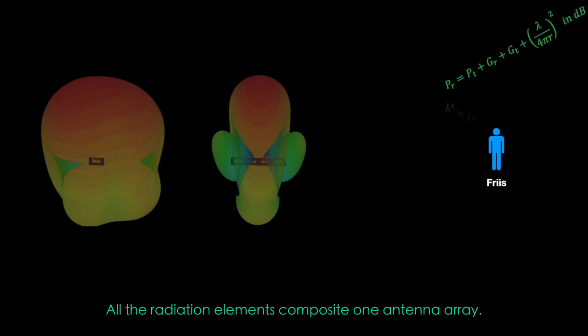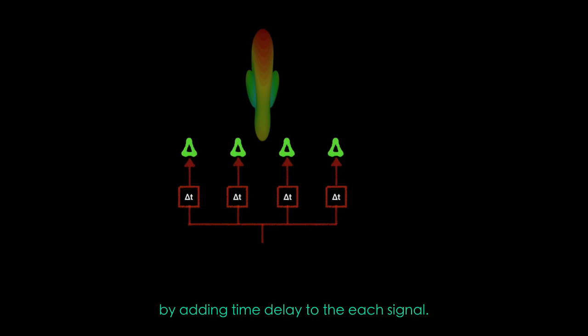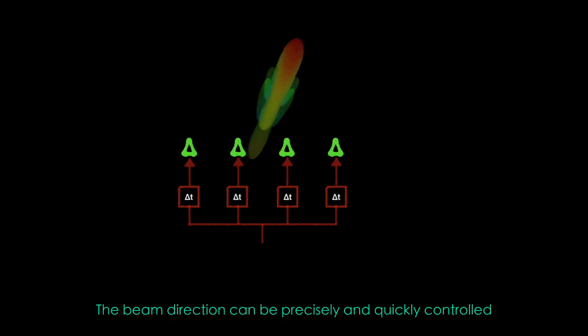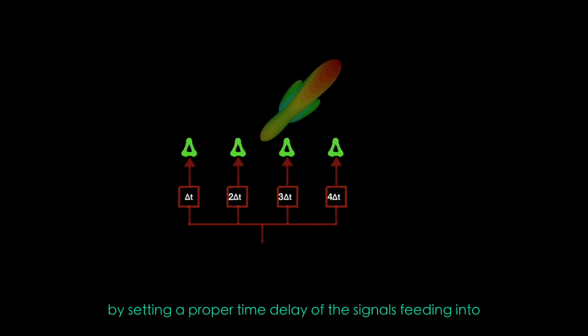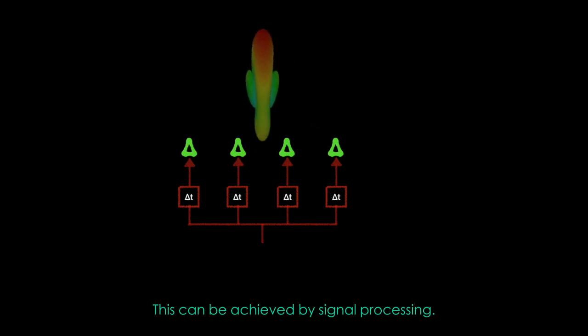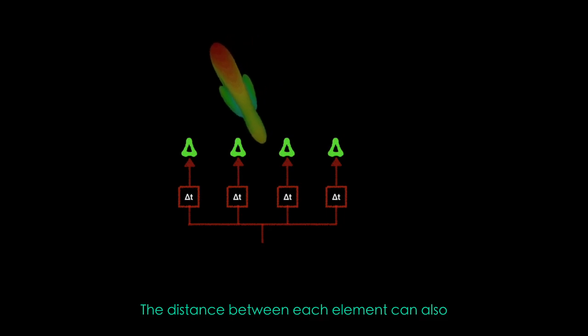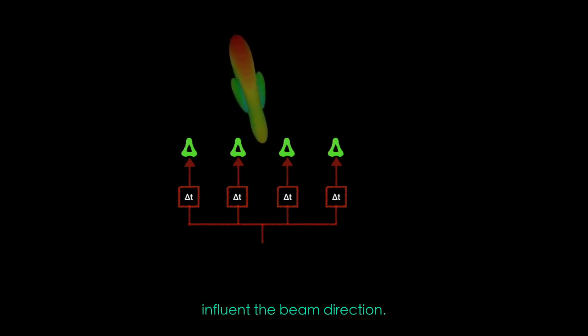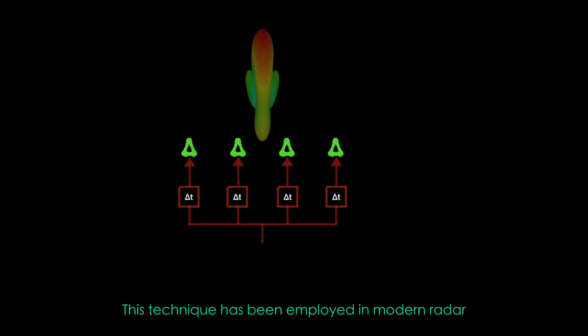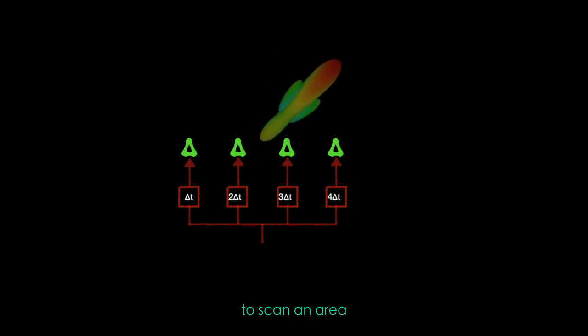All the radiation elements composite one antenna array. This can reduce the antenna size and simply control the beam direction by adding time delay to each signal. The beam direction can be precisely and quickly controlled by setting a proper time delay of the signals feeding into each radiation element. This can be achieved by signal processing. The distance between each element can also influence the beam direction.